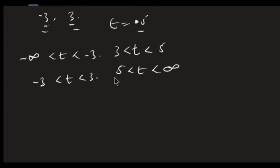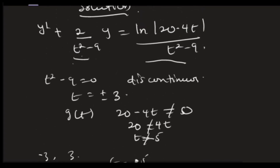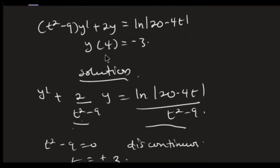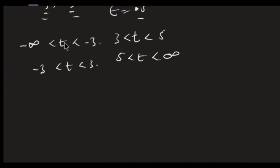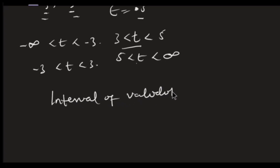For the interval of validity, the chosen interval must contain t₀. In our initial condition, t₀ is 4. Among the four intervals, 4 is not in the first, not in the second (since it's less than 3), but 4 is found in 3 less than t less than 5. Hence my interval of validity is simply 3 less than t less than 5 — without solving the differential equation. Thank you for joining; don't forget to subscribe to support.